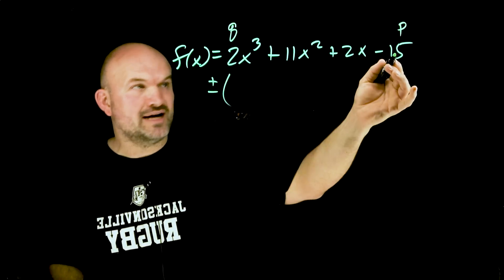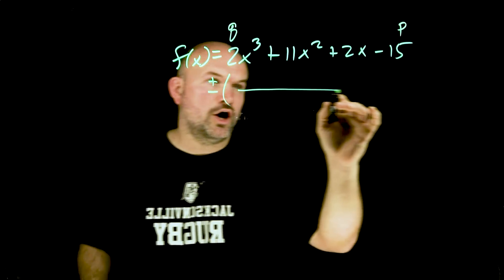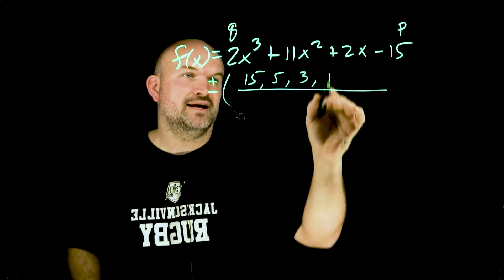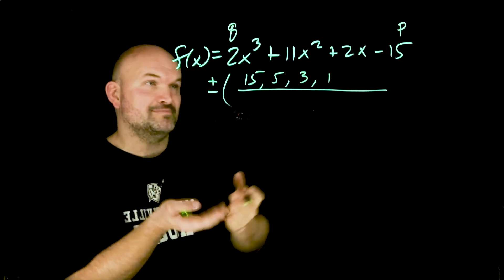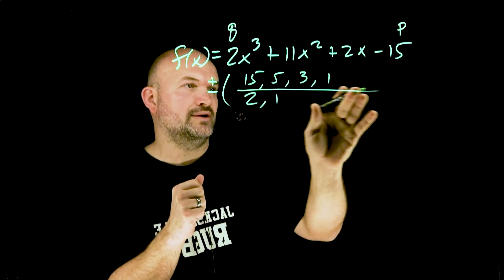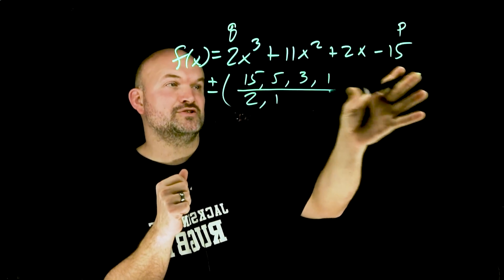We basically take our constant which is P and list all of the factors. So we have 15, 5, 3, and 1. These are all the numbers that make up 15 and then we take the factors of Q which in this case would be 2 and 1. So this is the list of all possible rational zeros.